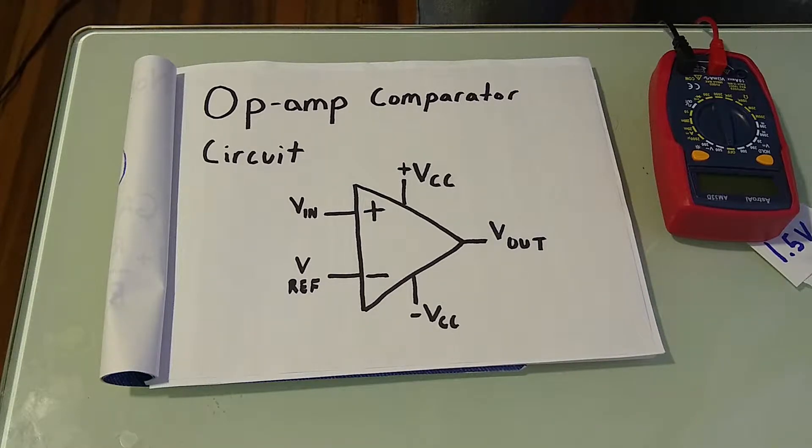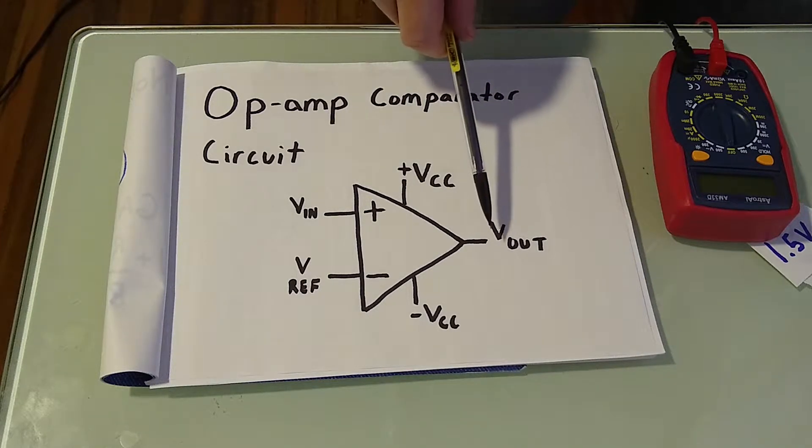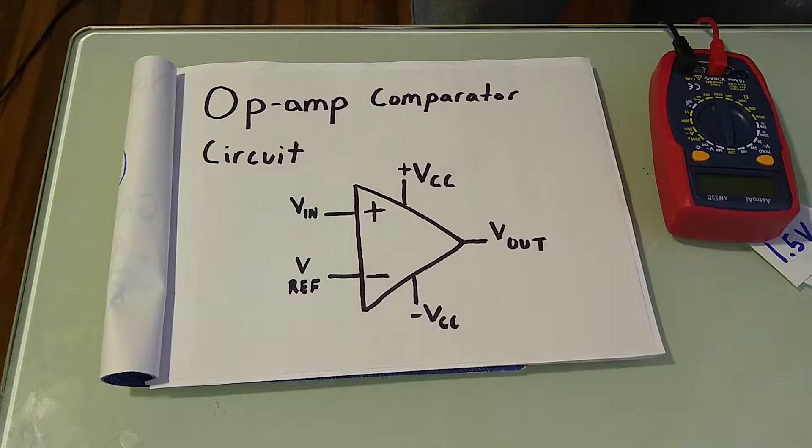Voltage comparators use positive feedback or no feedback at all, open loop mode, so we're missing our feedback circuit here, to switch its output between two saturated states, positive or negative.